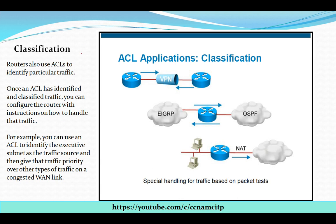Now I will talk about classification. The meaning of classification is simply giving a clarification of the type of network traffic — special handling for traffic based on packet type. Routers also use ACLs to identify particular traffic. Once an ACL has identified and classified traffic, you can configure the router with instructions on how to handle it. For example, you can identify an executive subnet as a traffic source and give it priority over other traffic on a congested WAN link.